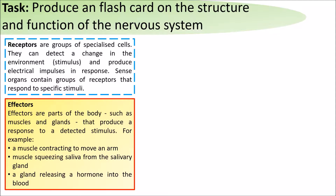Receptors are groups of specialized cells that can detect a change in the environment, which is called a stimulus, and produce electrical impulses in response. Sense organs contain groups of receptors that respond to specific stimuli.